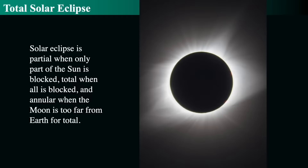We call them annular — not because they happen every year — annular eclipses when they make an annulus, which is a ring. Or it's total, like in this image from 2017.